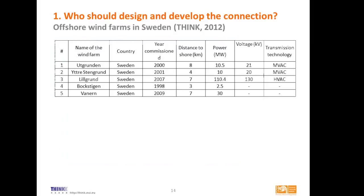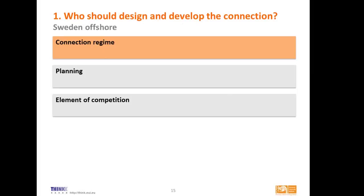Now, Sweden — the second member state we looked at. Sweden has a few offshore wind farms, including some of the early developments, all close to shore and most relatively small. What did Sweden do to change the regulatory regime? In Sweden it could be described as very simple — it's generators, corresponding to statement B of the poll. Generators design and develop their own connection. Assessing this regime: there is no real planning, because generators are doing it individually with no procedure to coordinate what different generators are doing. But from a competition point of view this is interesting, because every generator can innovate in connecting its own offshore wind farms.